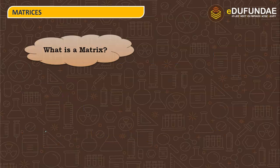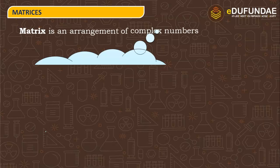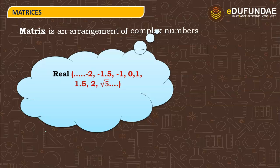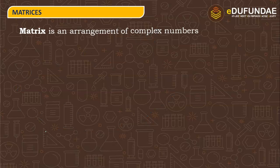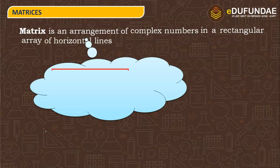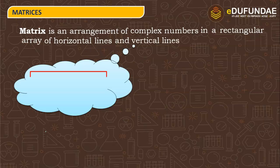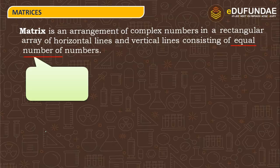What is a matrix? A matrix is an arrangement of numbers — including real numbers, complex numbers (which have real parts and imaginary parts), and imaginary numbers like minus 2 iota or root 3 — in a rectangular array of horizontal lines and vertical lines consisting of an equal number of elements.